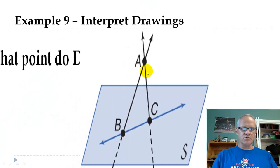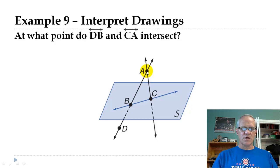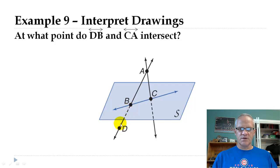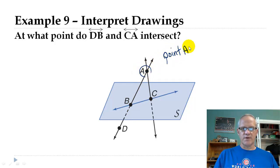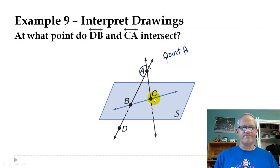At what point do lines DB and CA intersect? Here's D and B — that line goes up here. Here's C and A — that line goes through here. Where do they cross? They intersect right at point A. Similarly, if we had lines AC and BC, those would cross at point C. And that's it — that's the end of lesson one. Thanks for being here, and I'll talk to you next time. Mr. A, signing off.